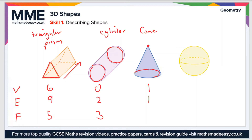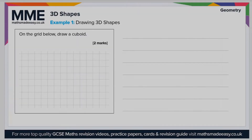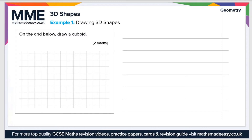The cone has two faces — the curved side and the bottom. Finally we have a sphere: there are zero vertices, zero edges, and only one face that goes all the way around. Now let's have a look at an example.